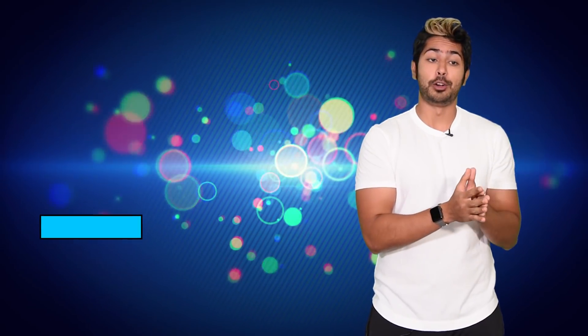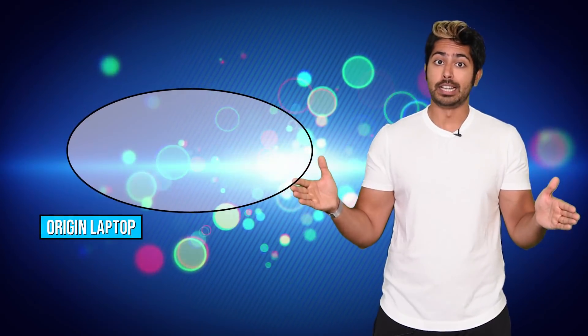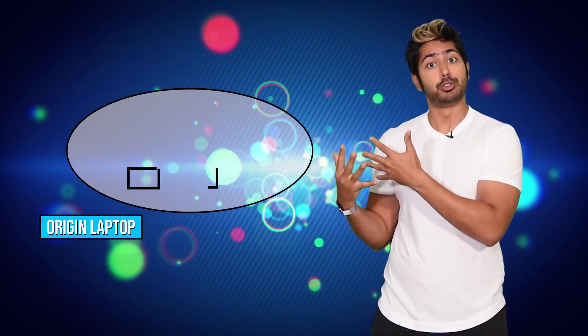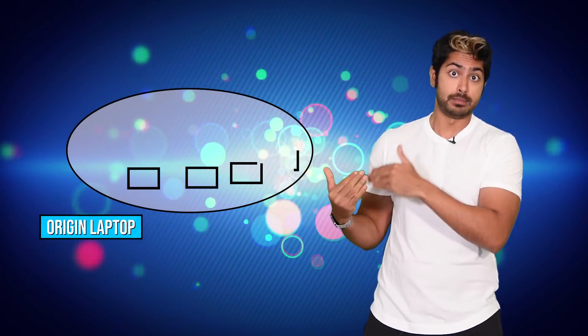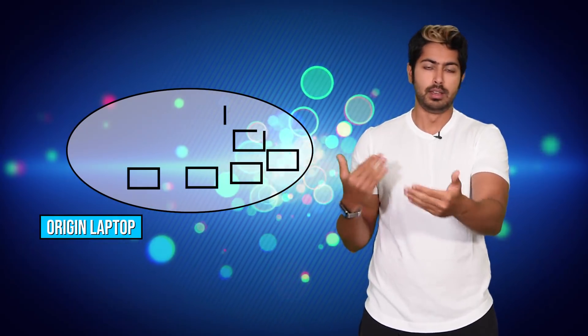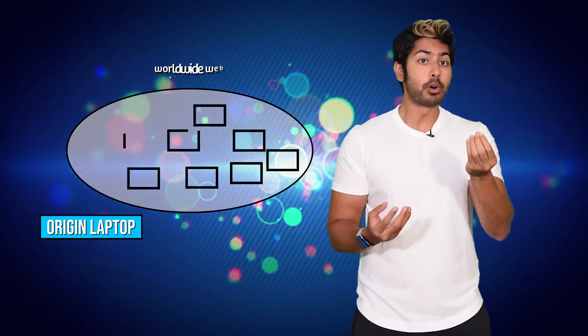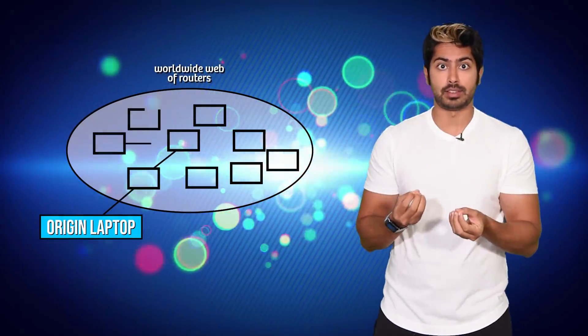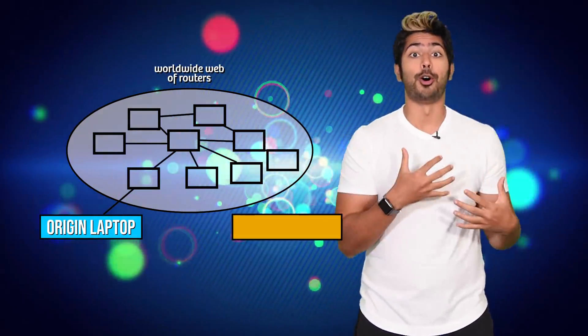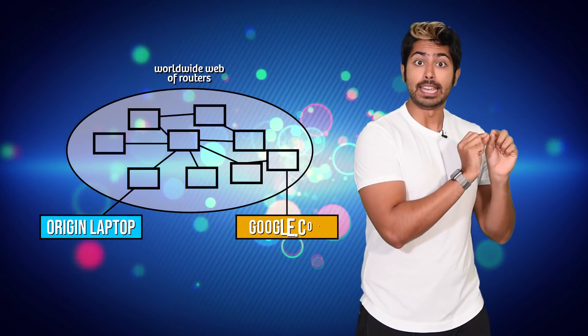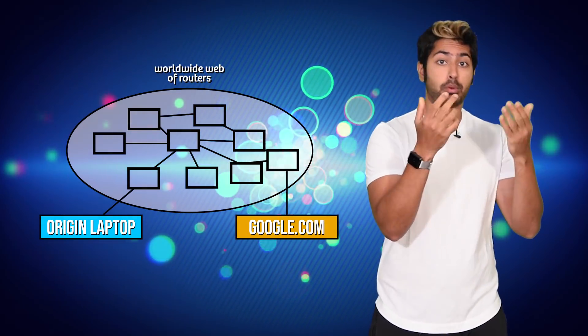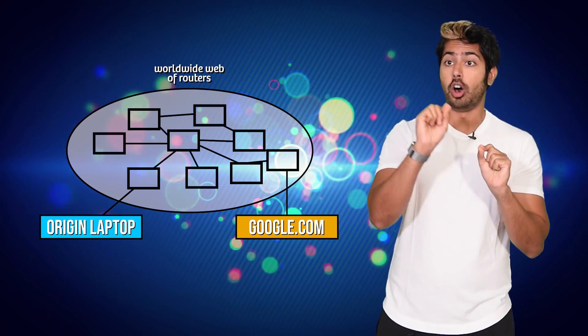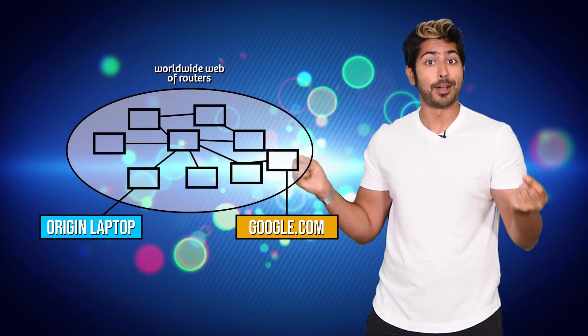Every time packets of data flow from one computer to another, like from your laptop to a web address like google.com and back to your laptop when you view a web page, a number of intermediate devices like routers are involved. Each time that data passes through a router, it processes it, then sends it along to the next device in the network.